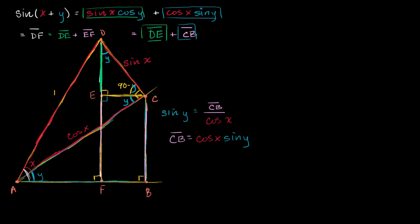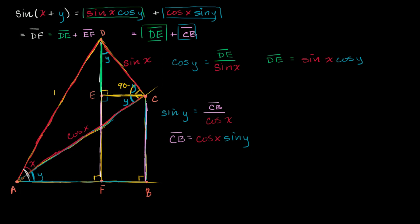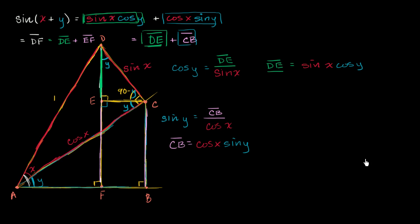Now we can express DE in terms of y and sine of x. Looking at triangle DEC, cosine of y equals DE over its hypotenuse, which is sine of x. Multiplying both sides by sine of x, DE equals sine of x times cosine of y. We've now shown DE equals that term. Since DE plus CB equals DF, which is sine of x plus y, the proof is complete.